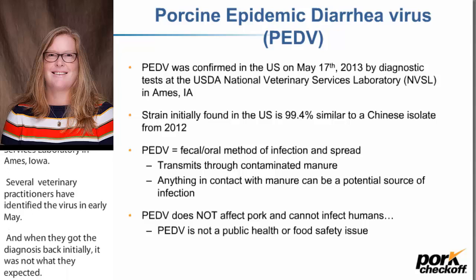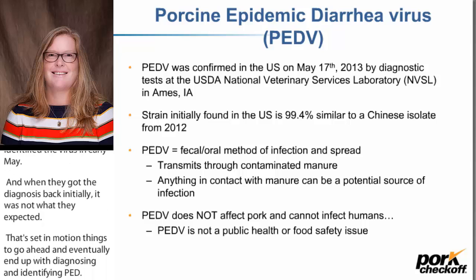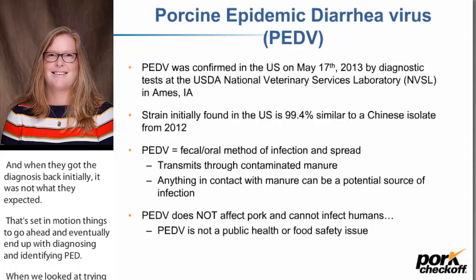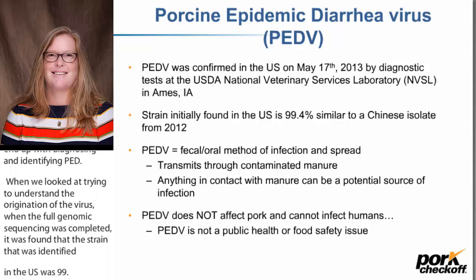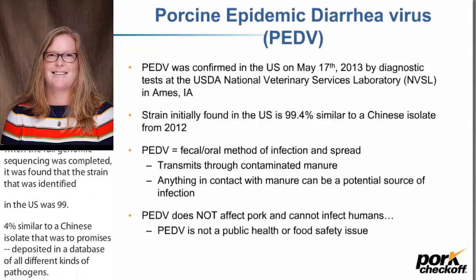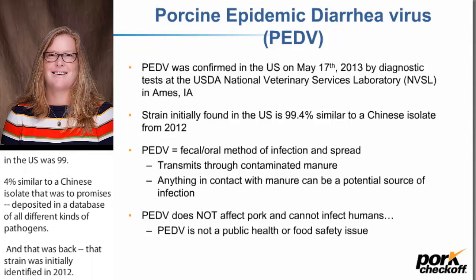When we looked at trying to understand the origination of the virus, when the full genomic sequencing was completed, it was found that the strain identified in the U.S. was 99.4% similar to a Chinese isolate that was deposited in GenBank — a database of all different kinds of pathogens — and that strain was initially identified in 2012. This tells us the virus has an Asian or Chinese origin, but it really doesn't tell us where specifically or how it got here.